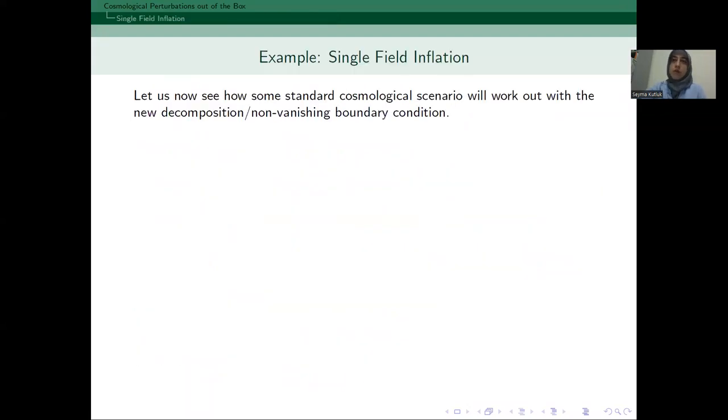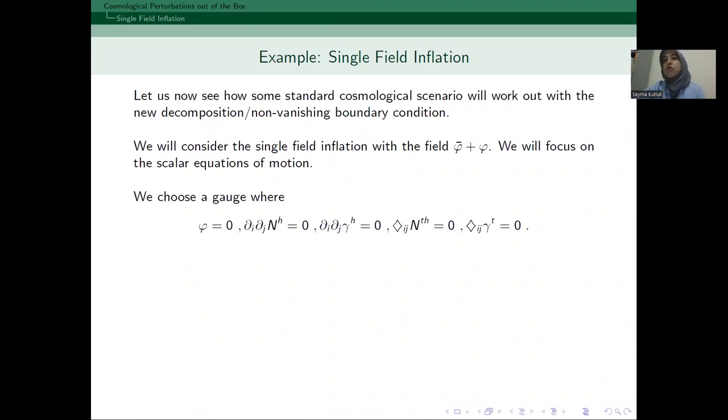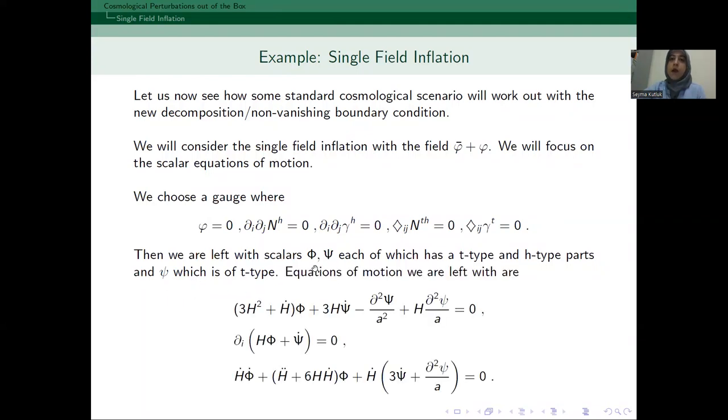So, let's now try to consider an example scenario. So, let us consider the single field inflation. And how does it go with new decomposition and non-vanishing boundary conditions? So, we will have an additional inflaton field. And we will focus on the scalar equations of motion. We choose a gauge where a good number of parts are equal to zero. And then, we are left with phi, psi, each of which has T-type and H-type parts, and the chi, which is of T-type. And the equations of motion are these three equations for those variables.